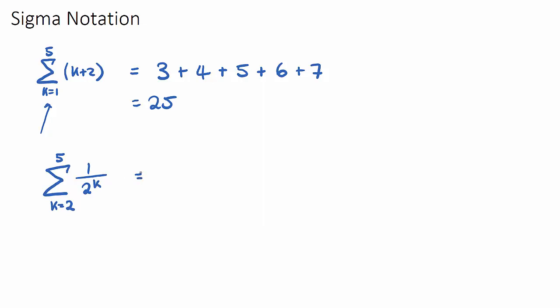Okay, let's use what we did up here. This means we start with our first value and k equals 2 and we sub that in. So we're going to get 1 over 2 to the power of 2. So 1 over 2 squared, and then sum.